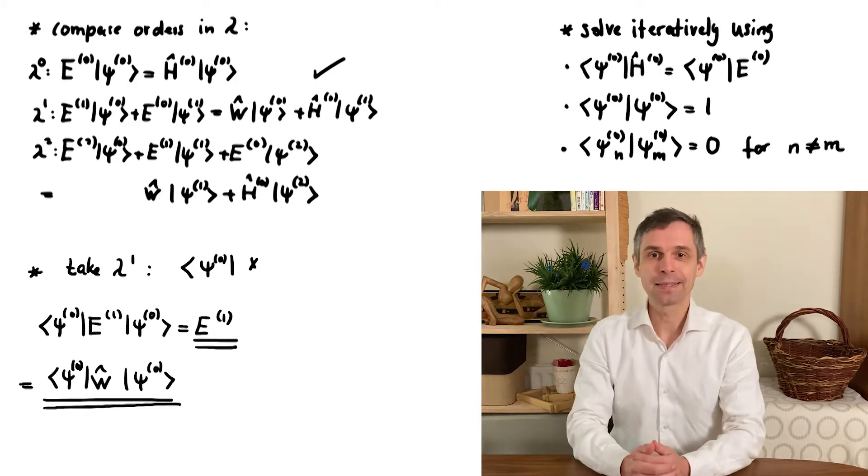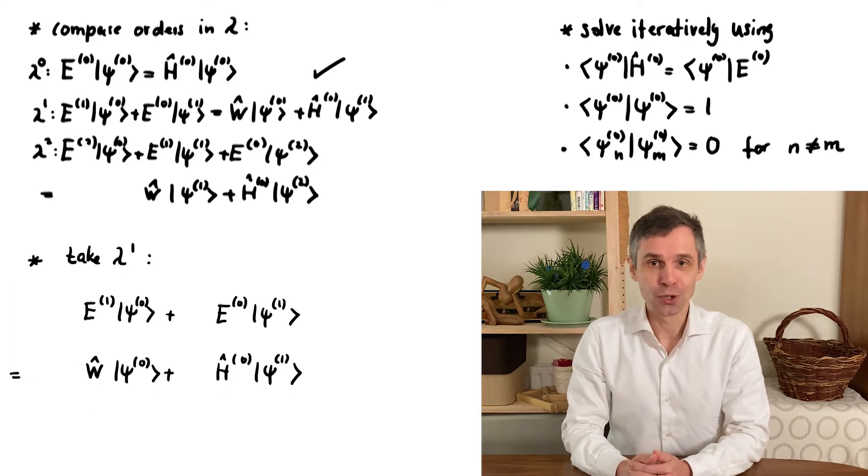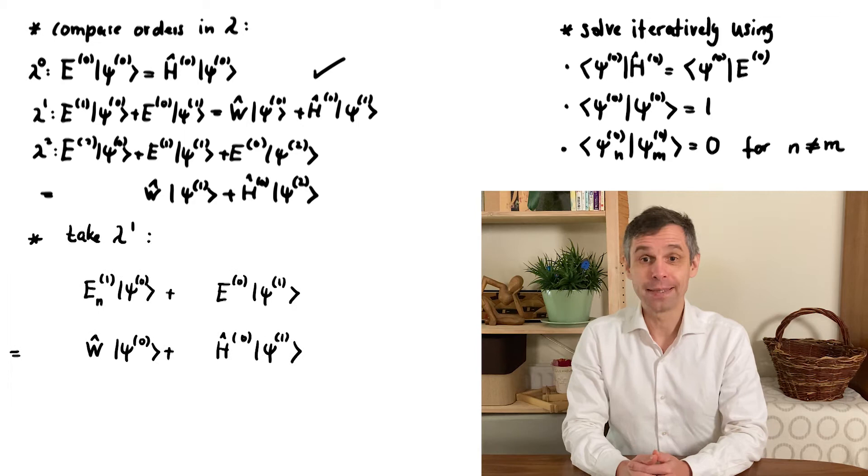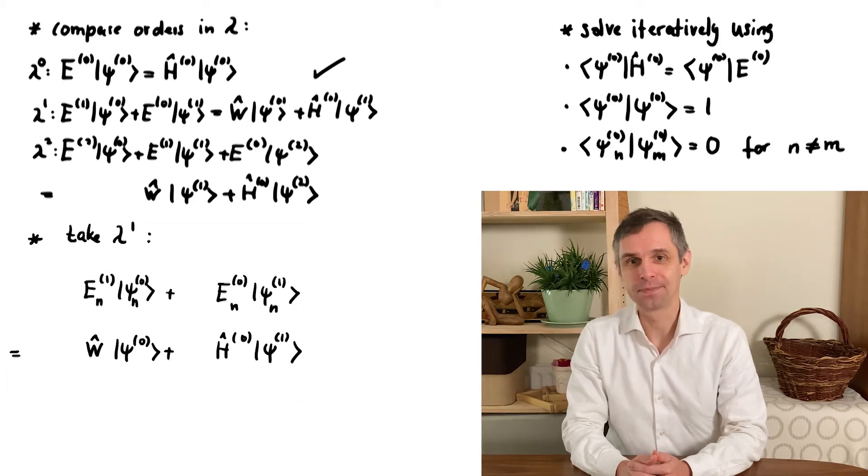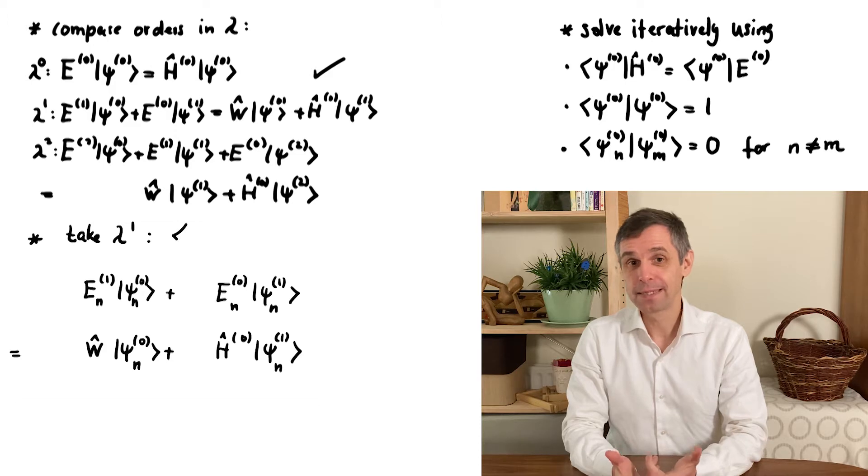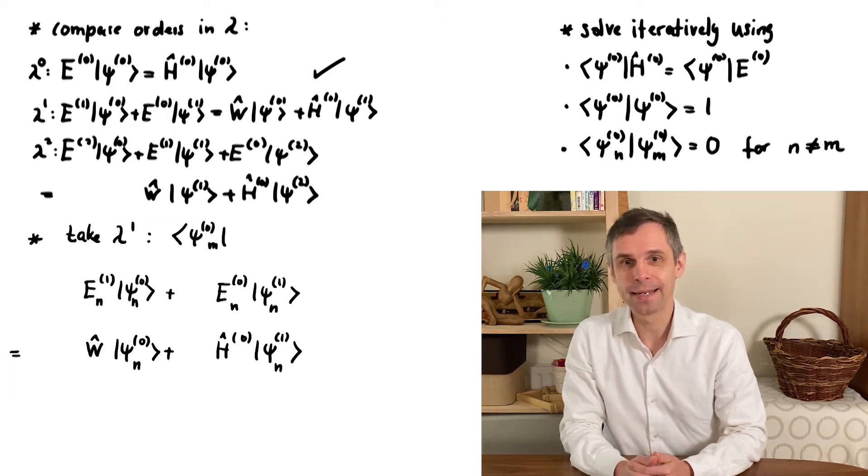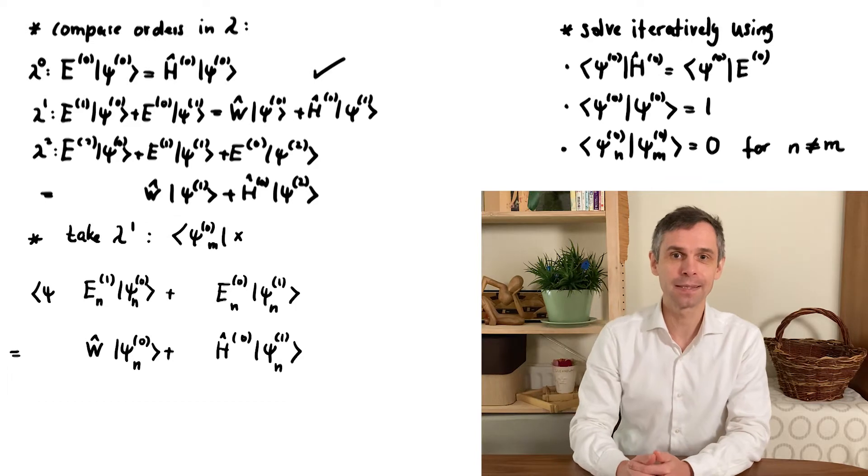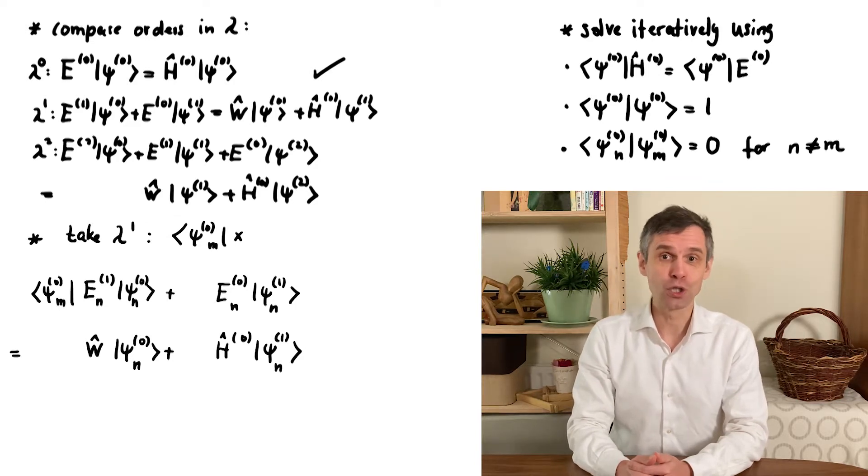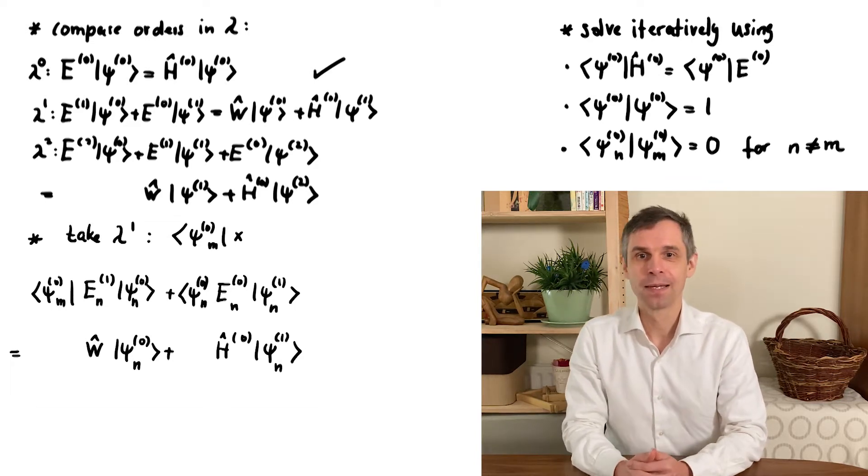Well, to obtain information about the quantum state, we can use the same relations as before but multiplied by another eigenstate of the original system. Now we need some extra indices to distinguish these states. I take n for the perturbed state we are interested in and m for the original state that we compare it with, so that's the state of the simpler system.